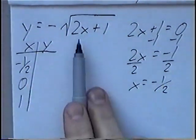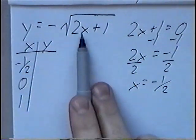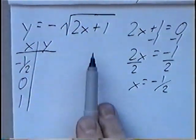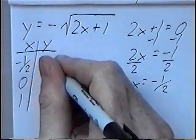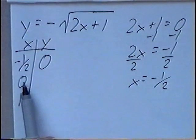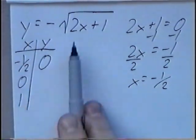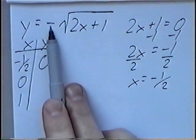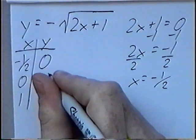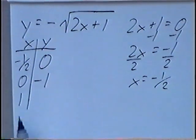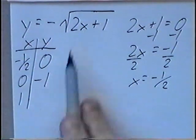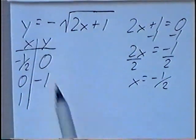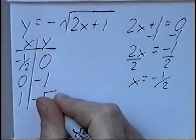Solving for the y values: plugging in negative one-half, two times negative one-half is negative 1, plus 1 is zero, and negative square root of zero is zero. Plugging in zero, two times zero is zero, plus one is one, the square root of one is one, and the negative outside makes the y value negative one. Plugging in one, two times one is two, plus one is three, so we have negative square root of three.